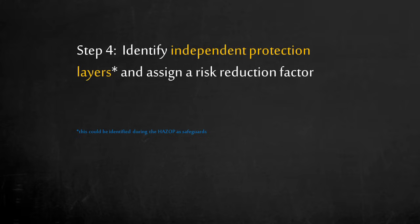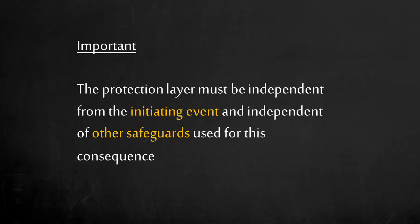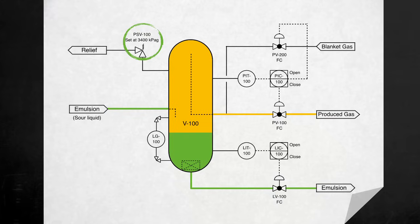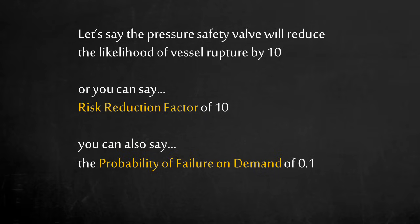Step 4: identify the independent protection layers in the system. These are mechanisms which prevent the consequences from occurring, and are the safeguards identified during a HAZOP. To assign a safeguard as an independent protection layer, it must meet specific requirements defined by international and regional standards. The protection layer must be independent from the initiating event and other safeguards. There is a pressure safety valve on the vessel — PSV100 will protect V100 from overpressuring. This valve can reduce the likelihood of vessel rupture by a factor of 10, expressed as a risk reduction factor of 10 or a probability of failure on demand of 0.1.